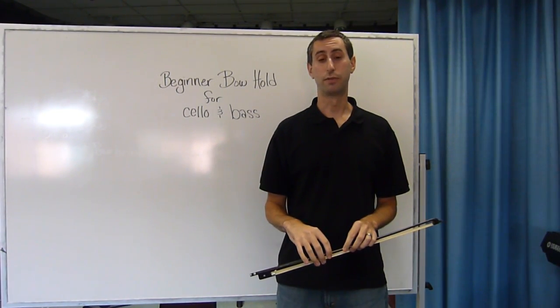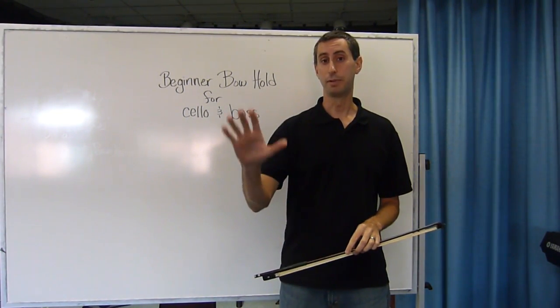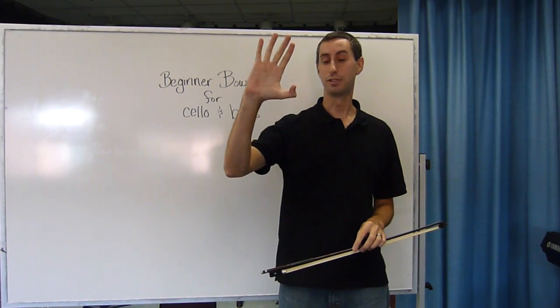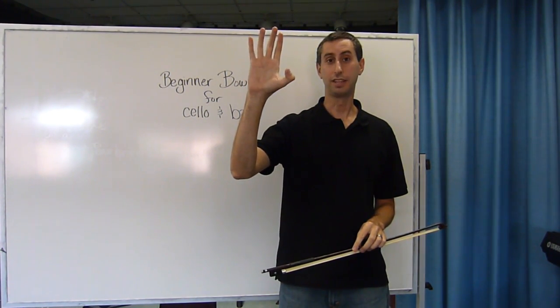To complete a beginner bow hold for the cello or double bass, the first step is to form a smile thumb, which is like this. Not like this, like this.